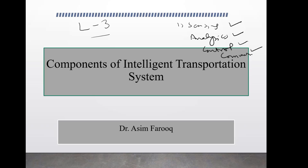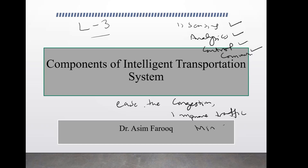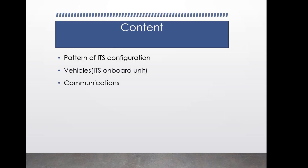The application of ITS is important because ITS includes a wide range of applications which process and share information for the purpose of easing congestion, improving traffic conditions, and minimizing environmental impact. It can be used for the transportation of freight as well as commercial and passenger transport. In our previous session, we covered the ITS configuration and ITS onboard and outboard systems and communication.